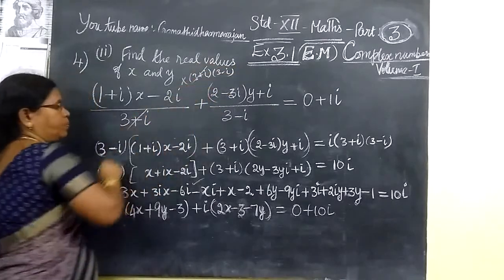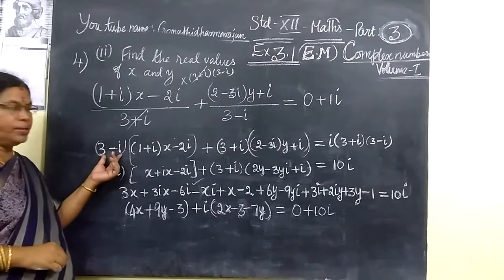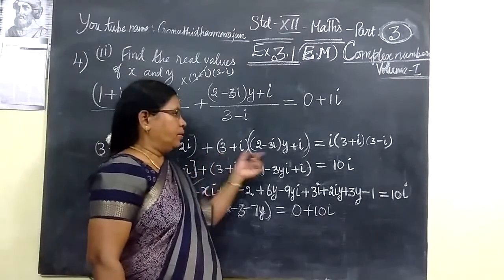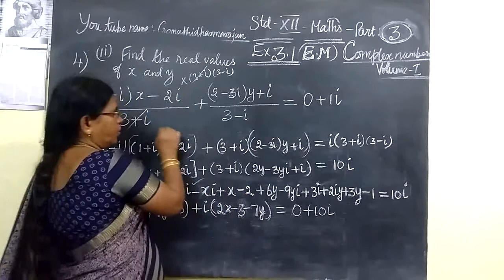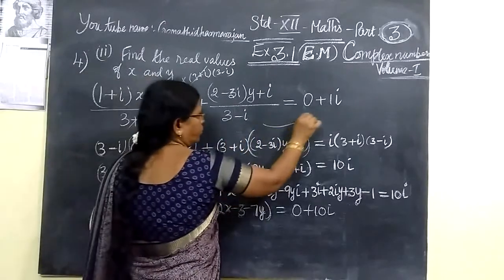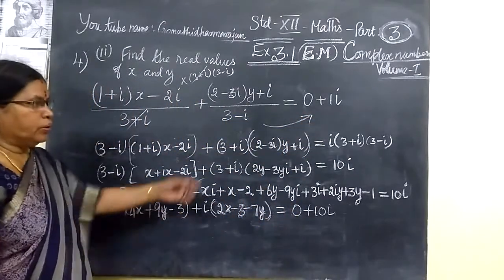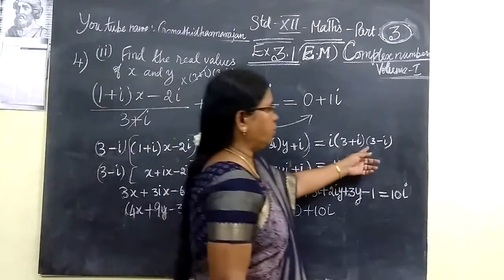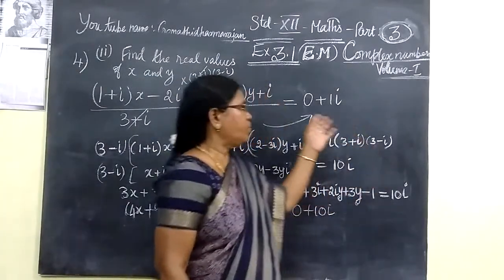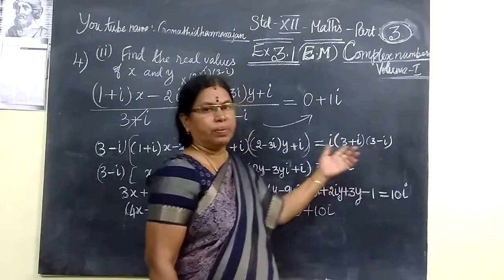The (3+i) terms get cancelled, so you are writing (3-i). In the same way, you go to (3+i). In the denominator, you are writing the LCM, which will go to the right-hand side. So multiply both sides by (3+i)(3-i).